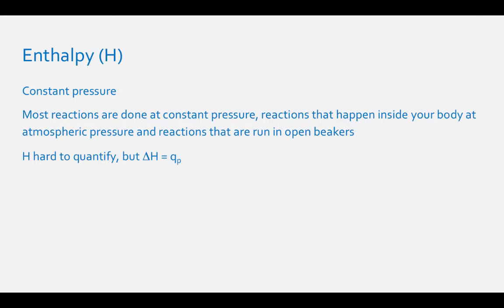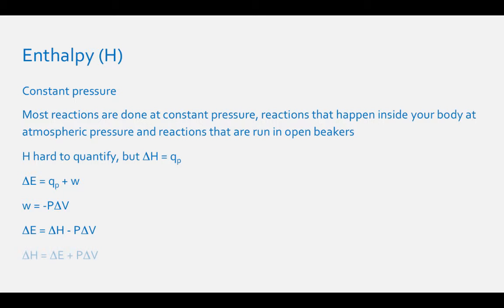Another equation for enthalpy is related to the equation for internal energy of a system: delta E equals heat plus work. The work we are concerned with in chemical systems is pressure-volume work, where work equals negative pressure times change in volume. If we substitute in our work term and our enthalpy term into our internal energy equation, we get delta E equals change in enthalpy minus pressure times change in volume. Solving for change in enthalpy: delta H equals delta E plus P times delta V.